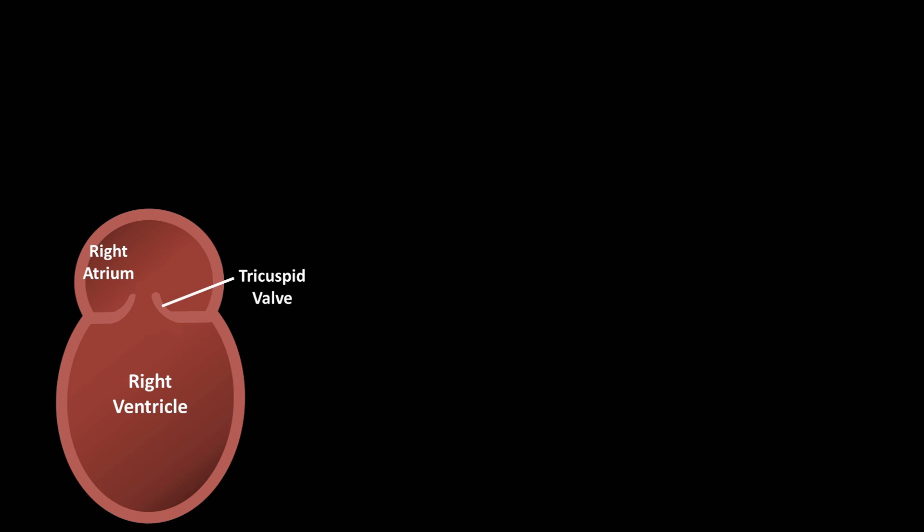Next, let's look at my personal favorite application of Bernoulli, which is in the field of cardiology. We'll start with a schematic of the right side of the heart with our right atrium and right ventricle, separated by the tricuspid valve. In most people, even completely healthy people, there's a small amount of blood that travels backwards through the tricuspid valve, moving from the right ventricle to the right atrium during systole. This is called tricuspid regurgitation, and measuring the velocity of this regurgitant jet provides important insights into hemodynamics with the help of Bernoulli.